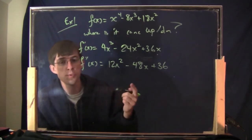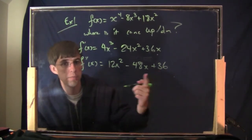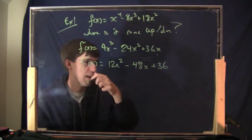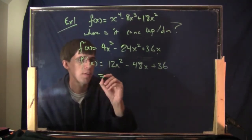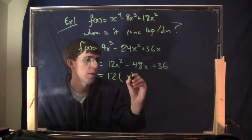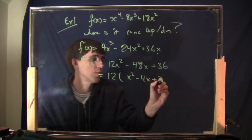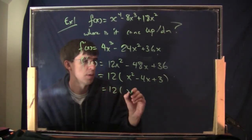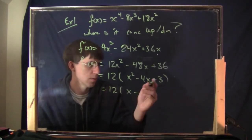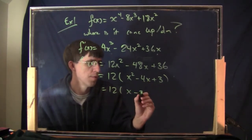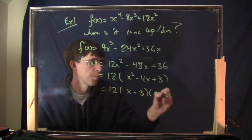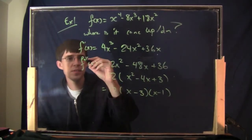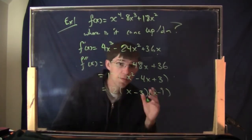Remember the steps: first find the second derivative and simplify as much as you can. You can factor out a 12 from the whole thing to get 12 times (x squared minus 4x plus 3), and then factor further to get 12 times (x minus 3)(x minus 1). This is the second derivative. Next we look for points where the second derivative does not exist or equals zero.